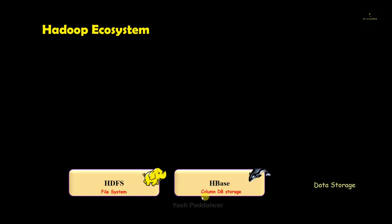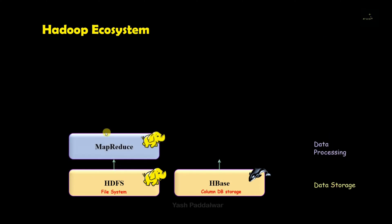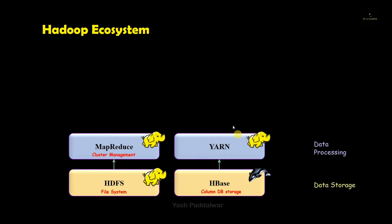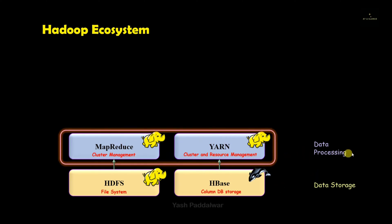The first section is the data storage section, where components used for storage consist of HDFS and HBase. The second section is for data processing, which contains components like MapReduce and YARN, used for managing as well as processing the data stored inside the blocks. Apart from these two, other components like Flink or Spark can also be used.